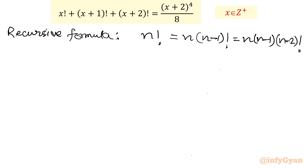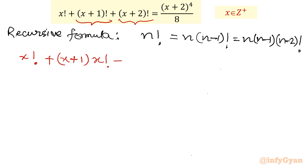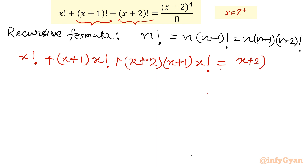We will apply this recursive formula at two places. Applying it: x factorial stays unchanged; (x+1)! becomes (x+1)·x!; and in the third term, (x+2)! becomes (x+2)·(x+1)·x!. This equals (x+2) to the power 4 divided by 8.